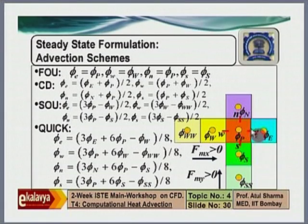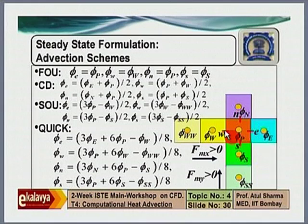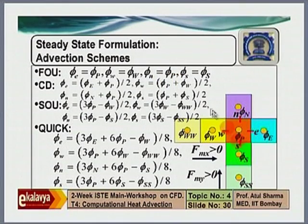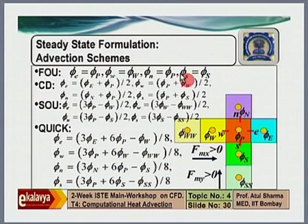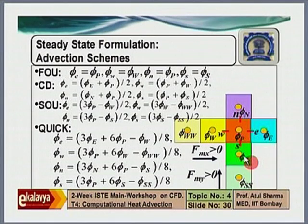Right now I am showing phi, which is a general variable — u velocity for x-momentum, v velocity for y-momentum, and temperature for the energy equation. But here we are discussing heat advection, so let us take phi as T. If the flow is in the positive x direction, then the upstream neighbor is phi_P, so when you use the first order upwind scheme, phi_e becomes equal to phi_P. When the flow is in the positive x direction on the west face, phi_w becomes equal to phi_W. Similarly, phi_n becomes equal to phi_P and phi_s becomes equal to phi_S. Note that lowercase letters represent face centers and capital letters represent cell centers.